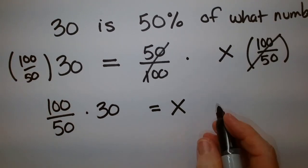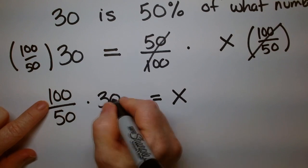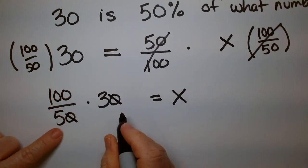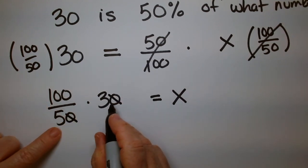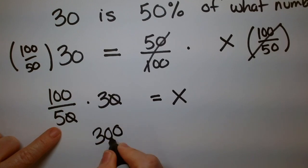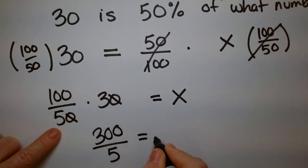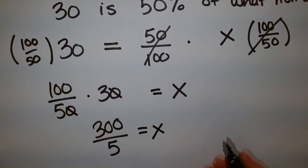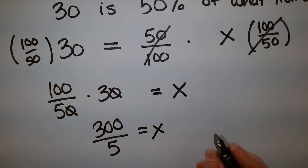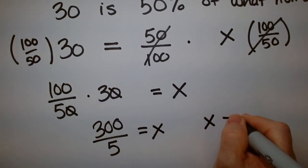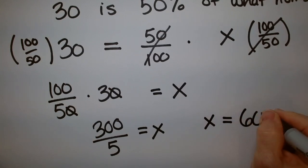And so that's going to be, I can cancel out one of these. And this is now going to be 300 over 5 equals X. And 5 into 300 is 60.